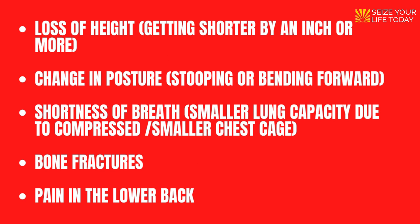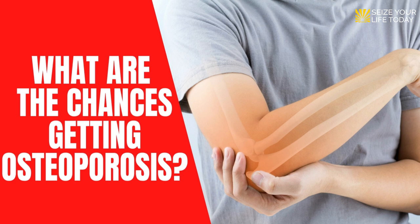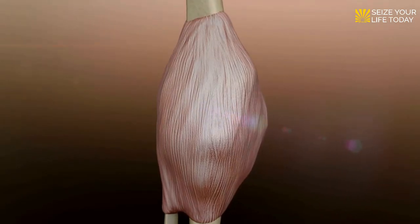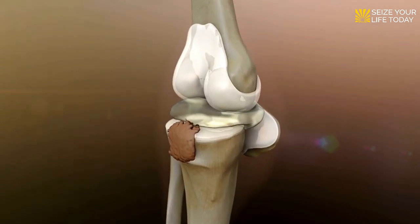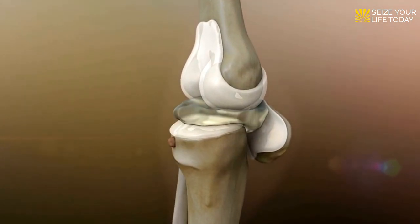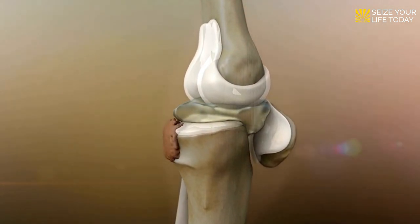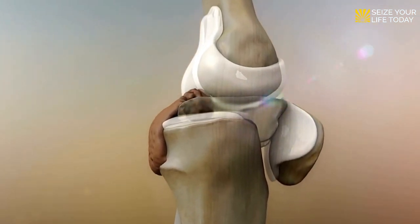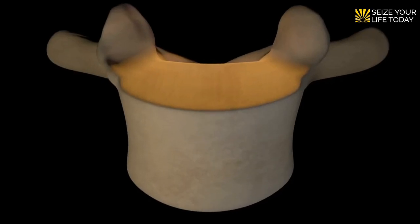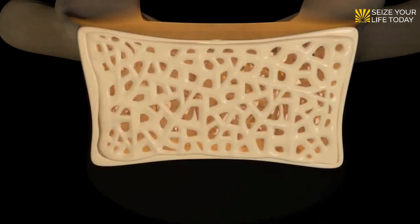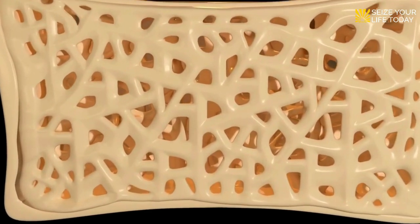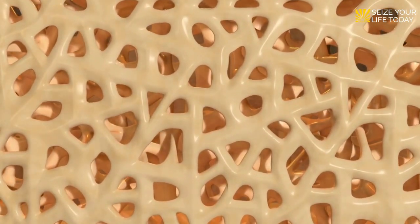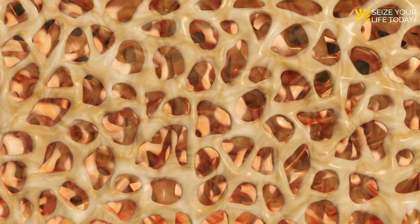What are the chances of getting osteoporosis? As bones gradually thin with age, the chance of developing osteoporosis rises after 30. The rate at which bone tissue dissolves and is absorbed by the body gradually increases, while the pace at which bone tissue is built gradually decreases. After the age of 30, you lose a modest amount of bone each year.